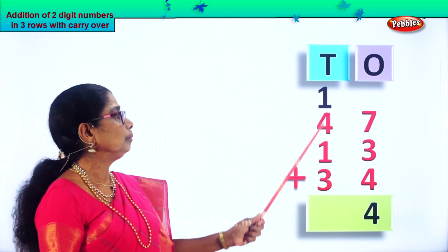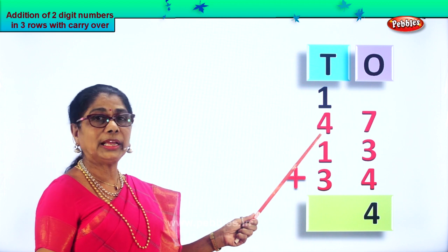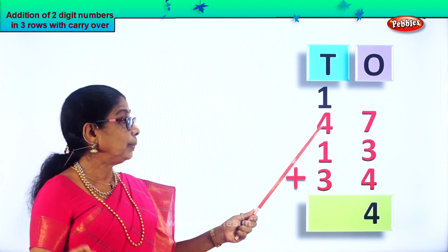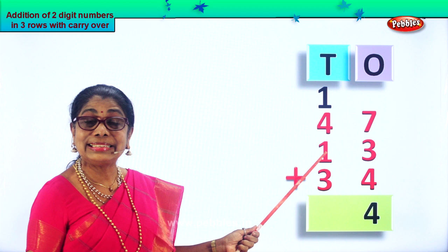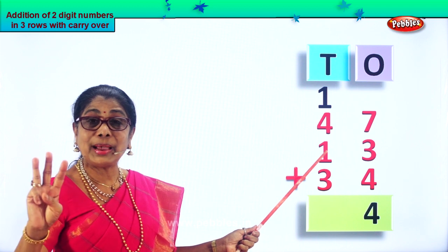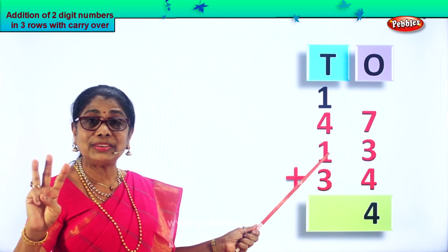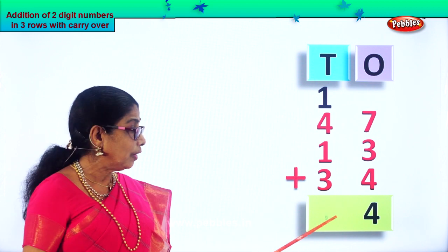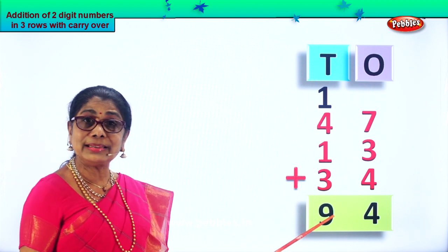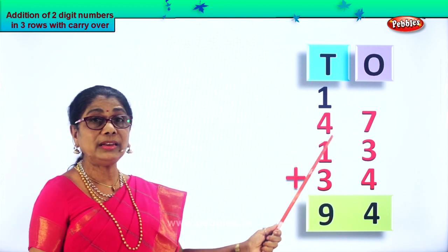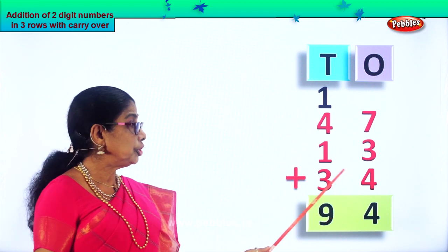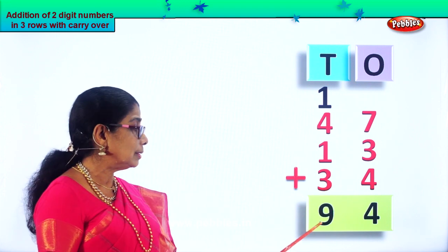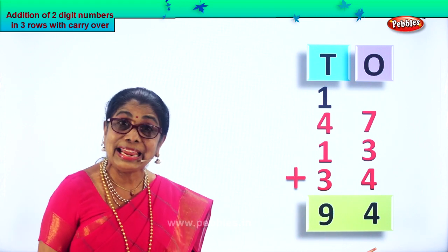So one ten plus four tens plus one ten plus three tens. One plus four is five. Five plus one is six. Six in the mind plus three: seven, eight, nine. We have nine tens here. So forty-seven plus thirteen plus thirty-four gives you the answer ninety-four — that is nine tens and four ones.